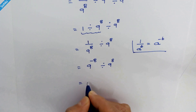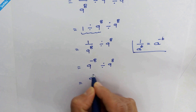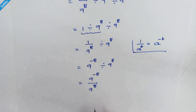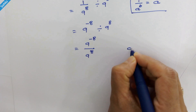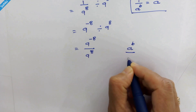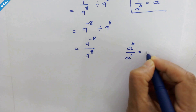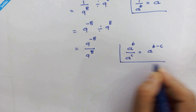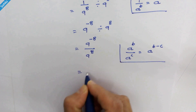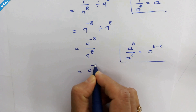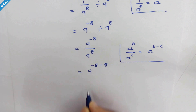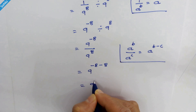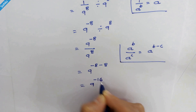Now in the next step we can write it as 9 raise to minus 8 upon 9 raise to 8. If we have a raise to b upon a raise to c, then it will be a raise to b minus c. According to this rule, this can be written as 9 raise to minus 8 minus 8. Minus 8 minus 8 will be minus 16, so we can write 9 raise to minus 16.